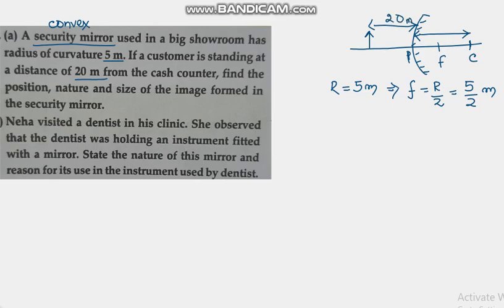As per our sign convention, u will be minus 20 meters. To measure the object distance, we have to go towards the pole, which is opposite to the direction of light. We consider light rays traveling from left to right, so when we measure object distance we go against the direction of light, towards the left. Therefore u will be minus.